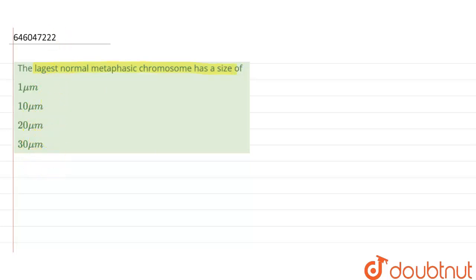So the correct answer here will be 30 micrometer. The largest normal metaphasic chromosome is found to be around 30 nanometer in radius.